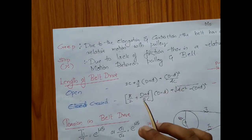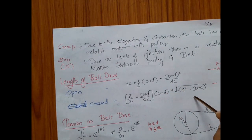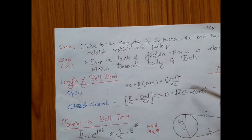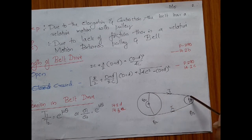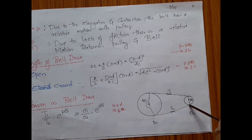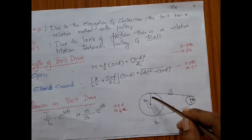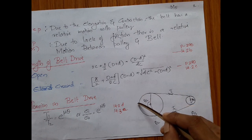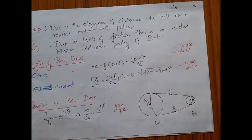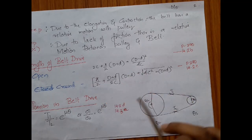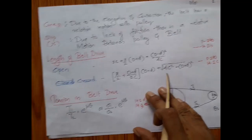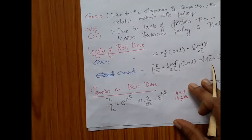Now let us discuss the length of the belt drive. In the data handbook you have two different sets of equations for finding the length. The length of the belt drive is the length in the tighter side, plus the length in the slack side, plus the length of belt running over each pulley. Summing all these contributes to the total length of the belt drive.